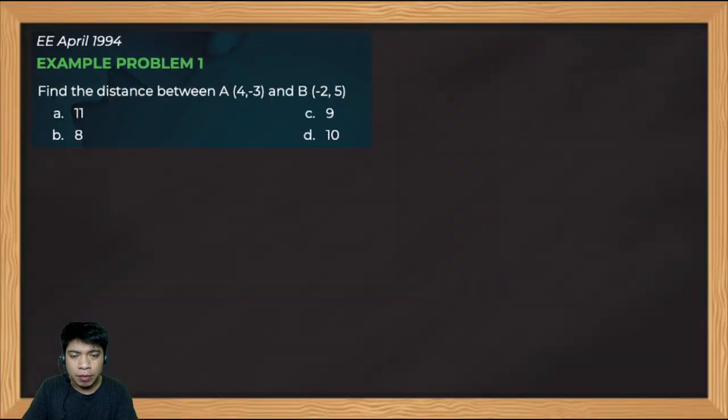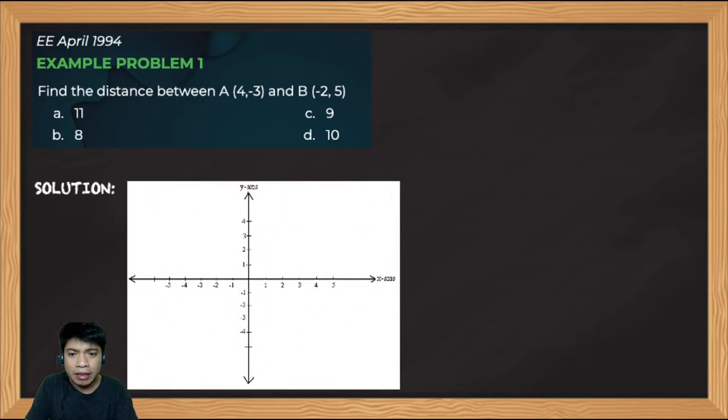Let's solve this problem. First, it's not required, but I suggest that you plot it so you can imagine the distance between these two points. This is point A, 4 comma negative 3. It's located at the fourth quadrant because the abscissa is positive and the ordinate is negative.